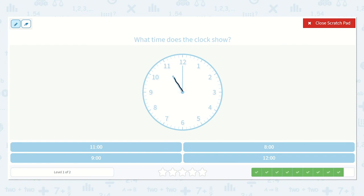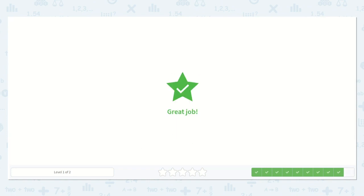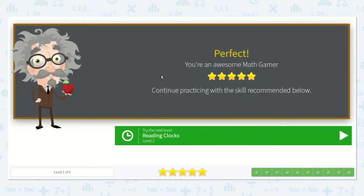Next, we have the hour hand pointing at the hour. And the minute hand pointing at the minutes. What hour are we at? Yes, 11. And how many minutes have passed? 0, 0. So it is 11 o'clock. Here it is. Great work, my friends. Thank you, my friends.